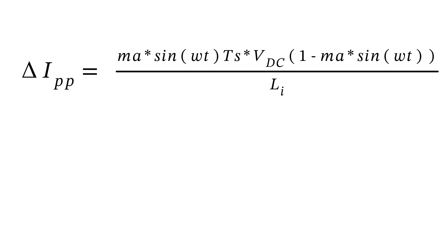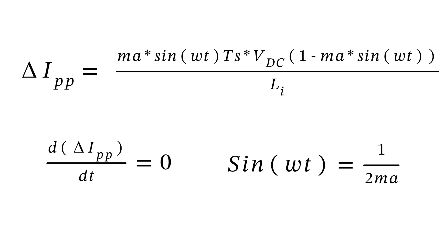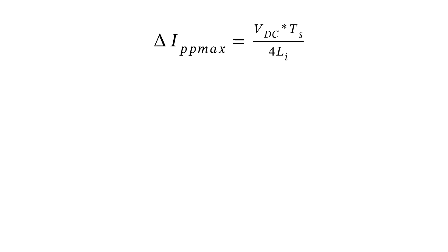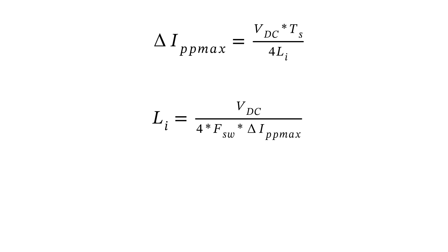After simplification, we get the final equation for delta I_pp. To find where the maximum ripple occurs, differentiate the equation and equate to zero — this gives sin(ωt) = 1/(2·M_a). Substituting back, we get delta I_pp_max equals V_dc·T_s divided by 4·L_i. Rearranging gives the final inductor design equation: L_i = V_dc divided by (4·f_sw·delta I_pp_max).